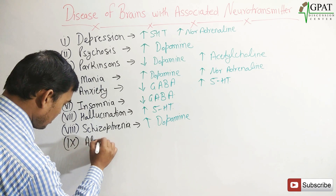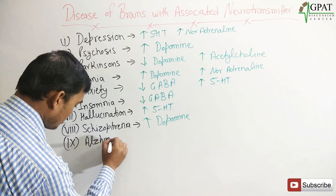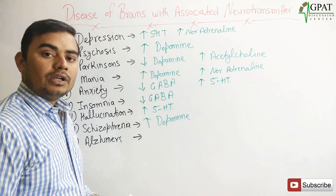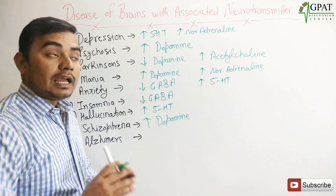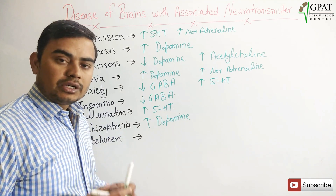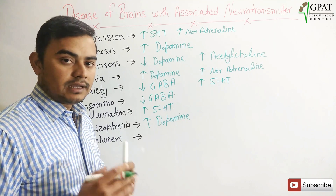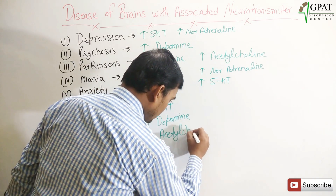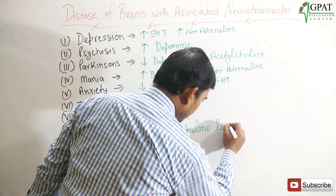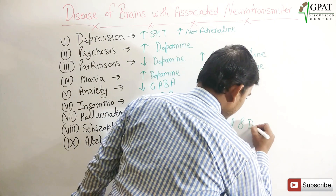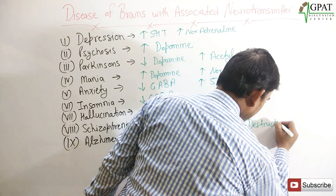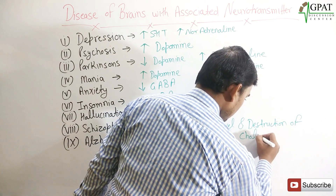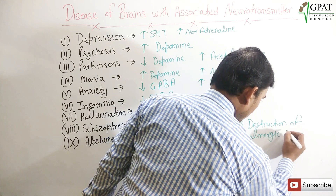Next is Alzheimer's. In Alzheimer's, your acetylcholine level decreases and there is neurodegeneration of the ganglionic cholinergic receptors. So here: decreased acetylcholine level and destruction of cholinergic receptors or cholinergic neurons.